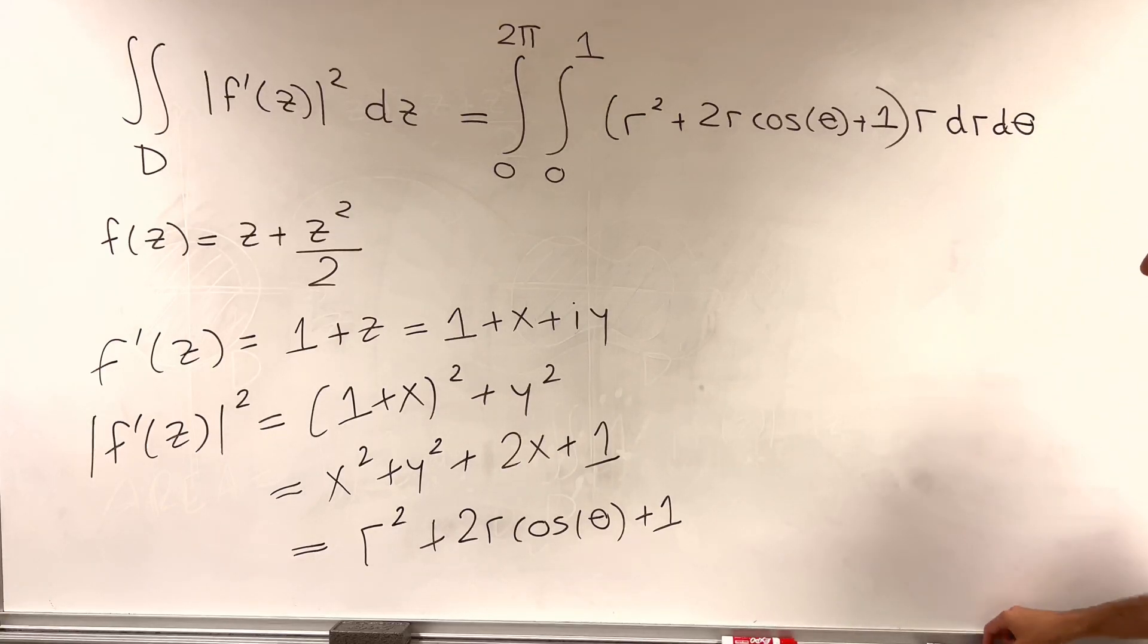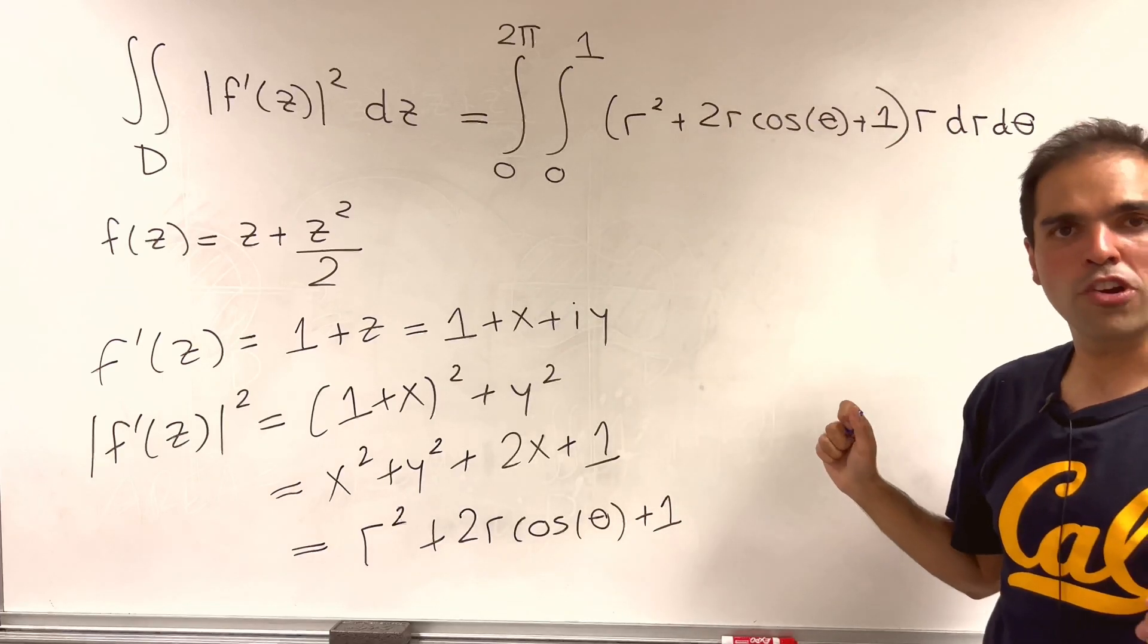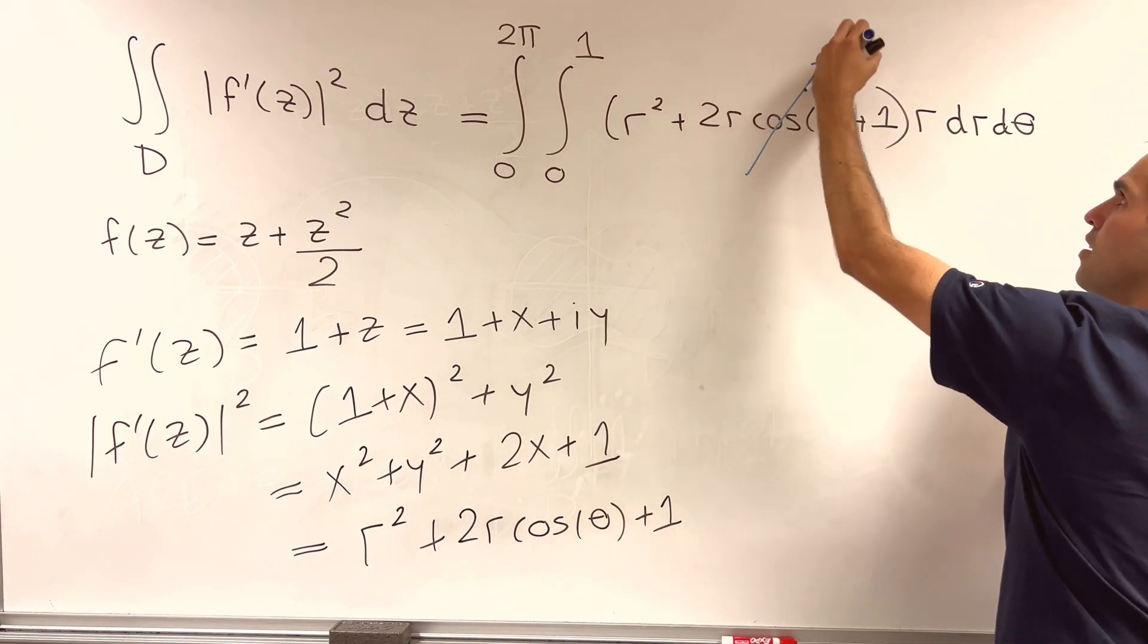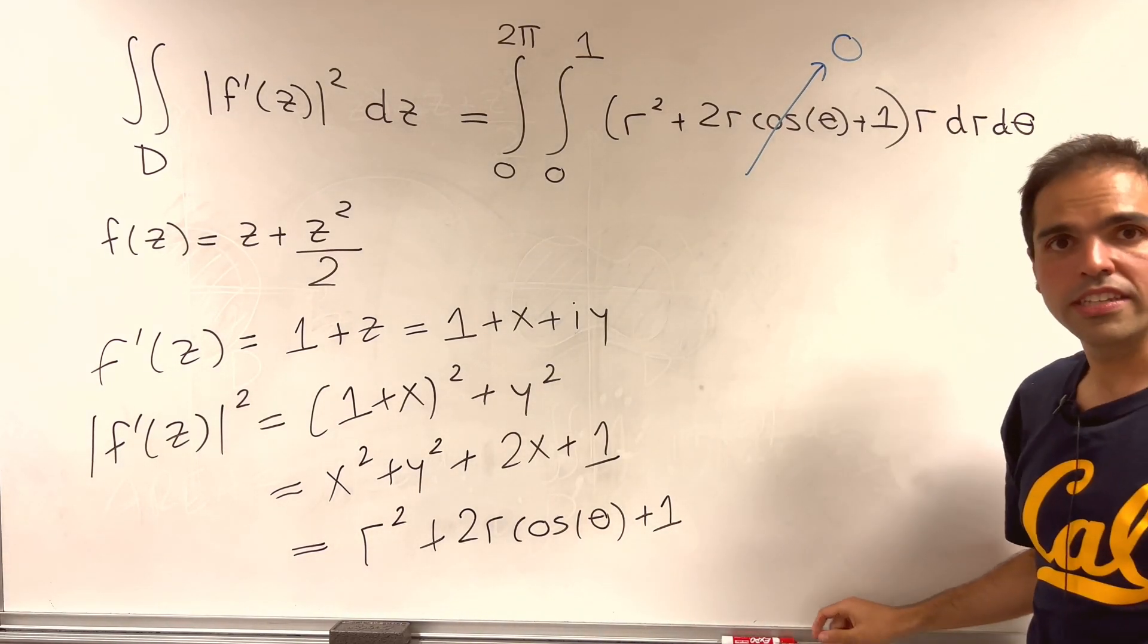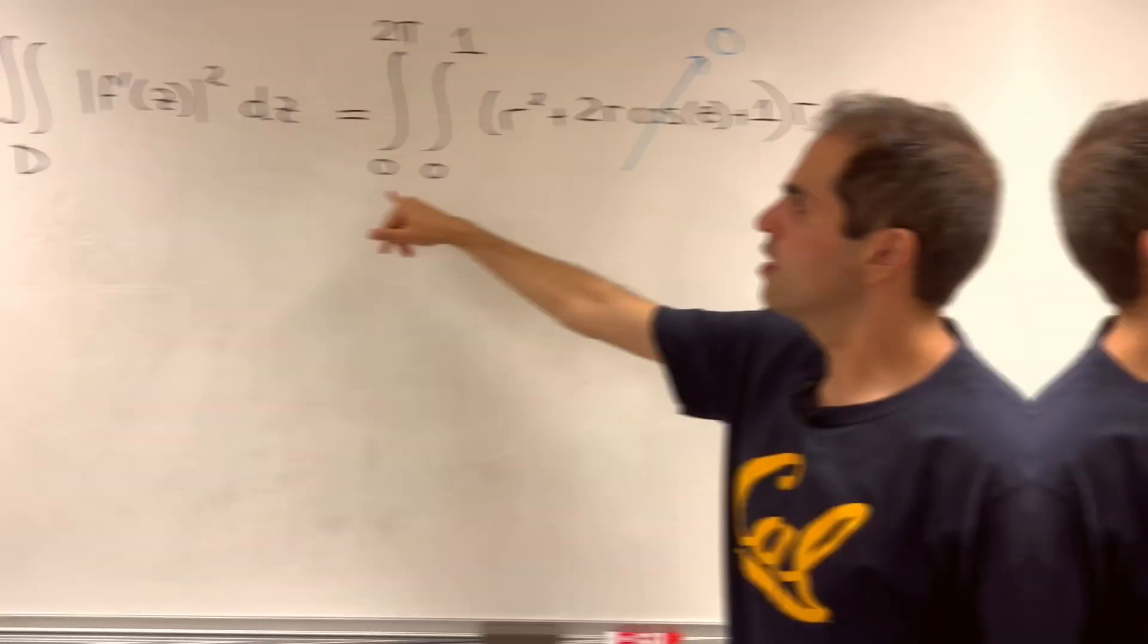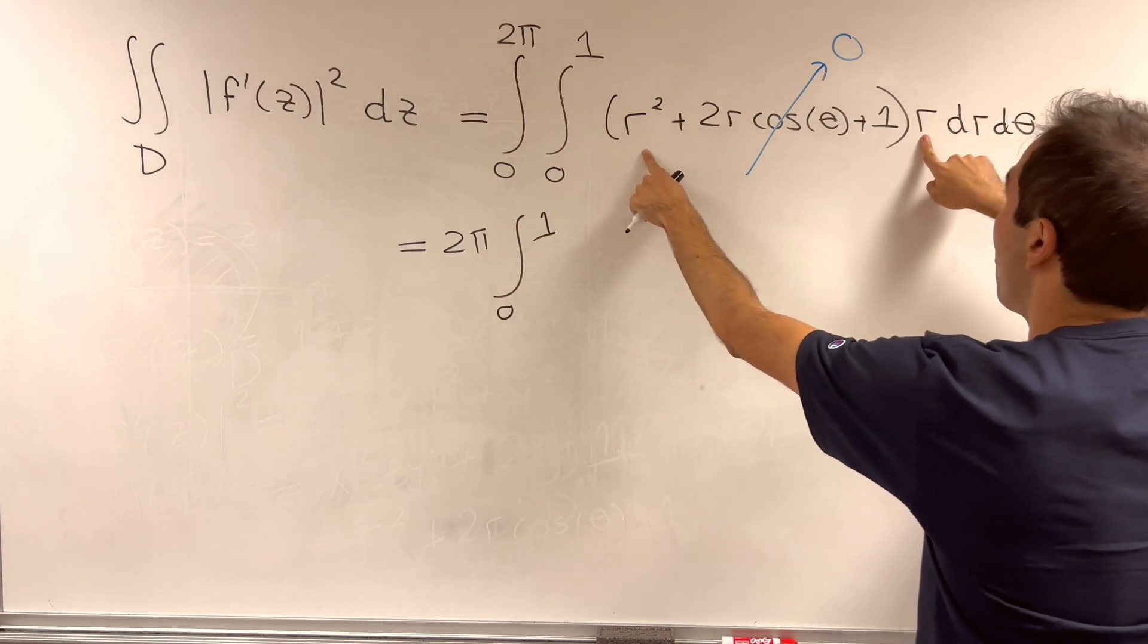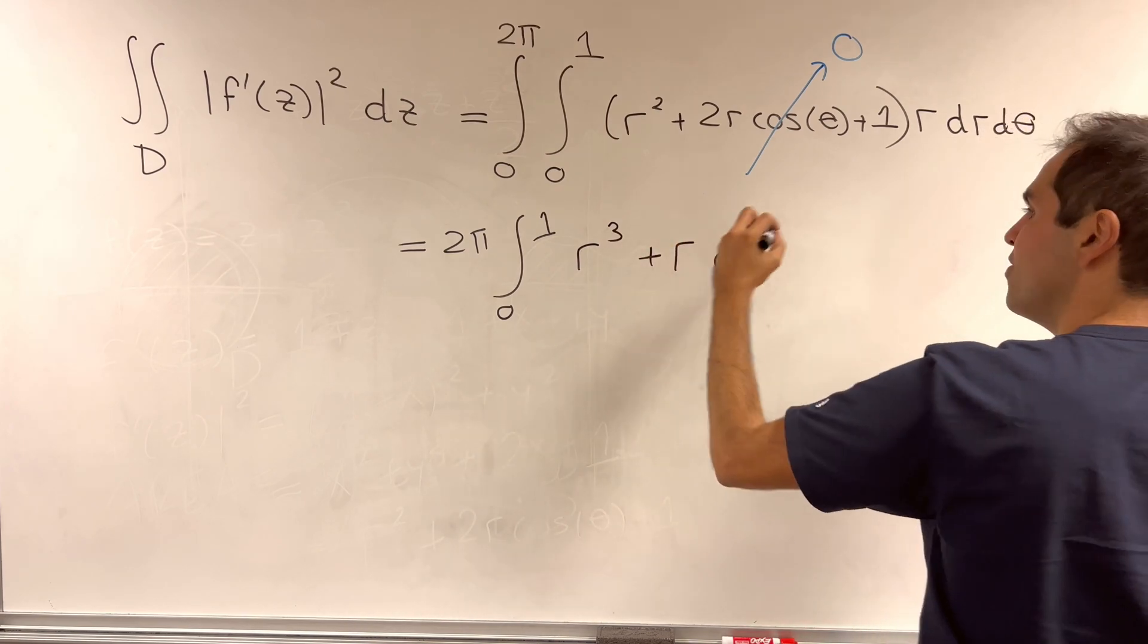And well, this simplifies quite nicely. More precisely, here the r's sort of come out. And if you integrate cosine from 0 to 2 pi, you just get 0. In other words, the middle term is just 0, and you just need to integrate a bunch of r's. So what you get is the following. Well, there's no more theta here. So it's just 2 pi times the integral from 0 to 1, r squared times r, that's r cubed, 1 times r, that's r, dr.